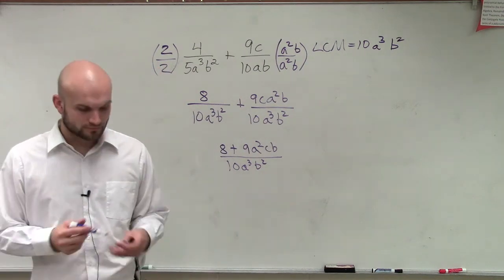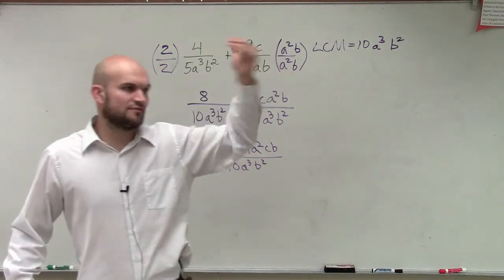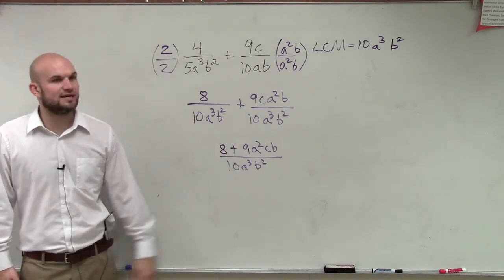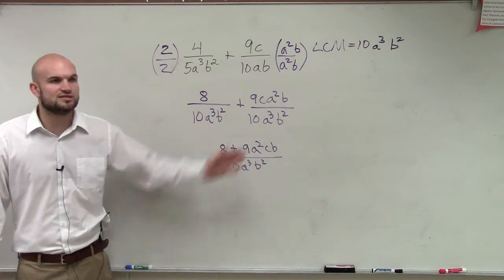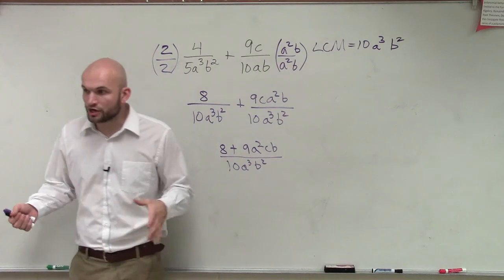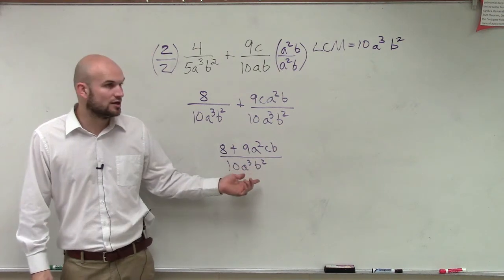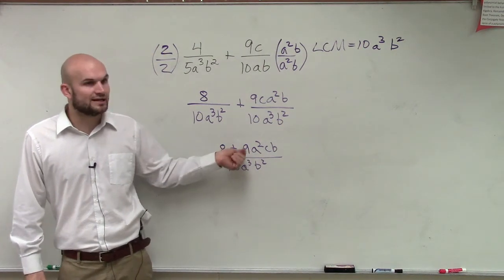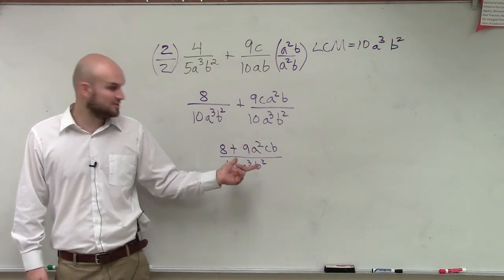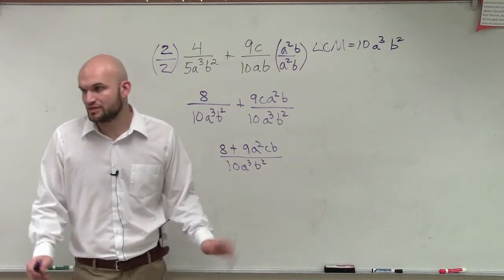Does it matter what order you put the variable in? No, usually we always like to have variables in descending order, meaning the largest degree first and then going down. Now, here comes the big mistake. Students are like, oh, why is it not 17, right? Or, why can't you simplify, cancel some of these out like we did with multiplication? Ladies and gentlemen, that works across multiplication and division. It does not work across addition and subtraction. So, since you're adding here, I can't simplify this 8 or the 9, and I definitely can't combine them, because there's 8 and 9A squared CB, not like terms. No. So, we can't combine them either. So, that's your final answer.